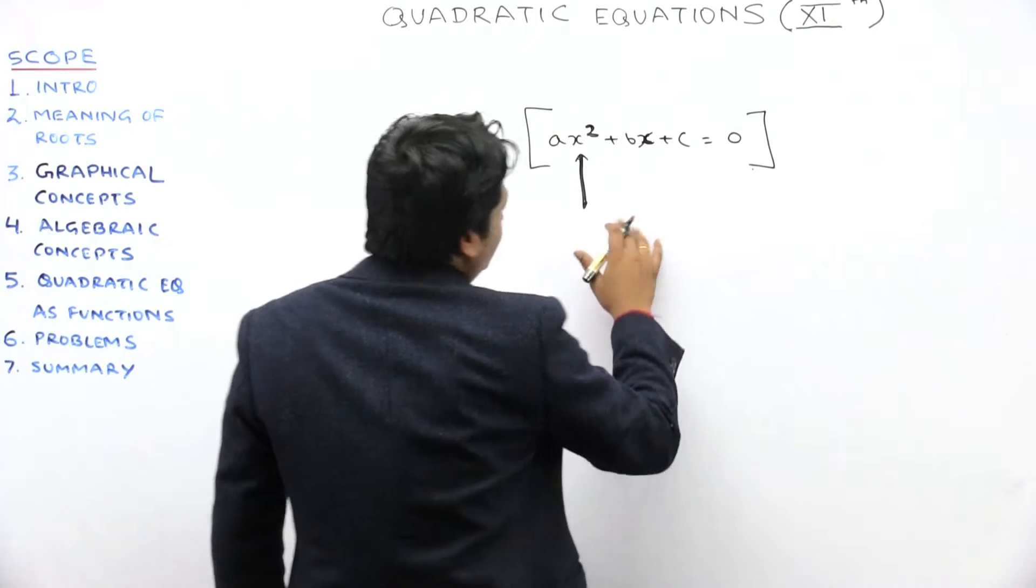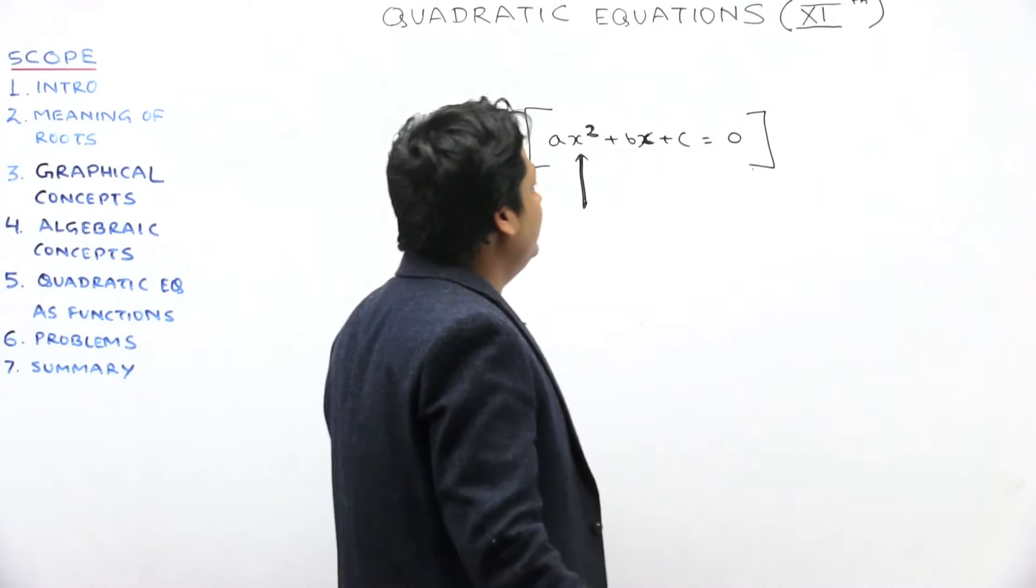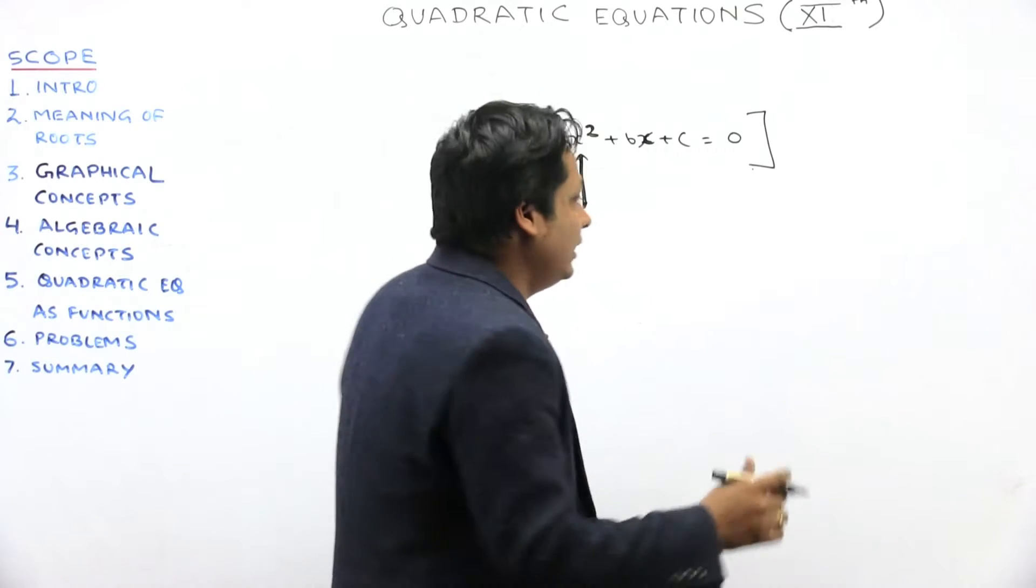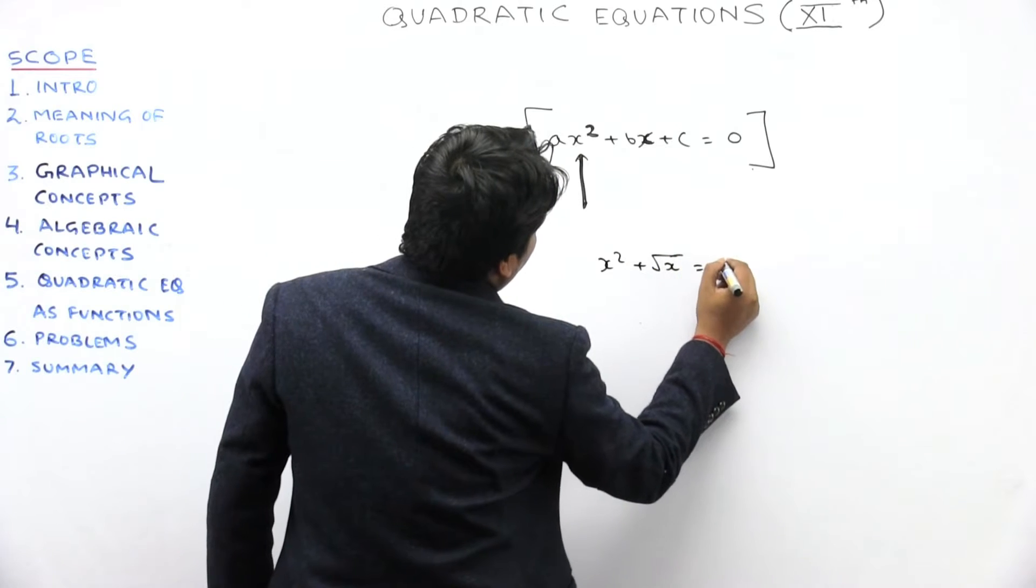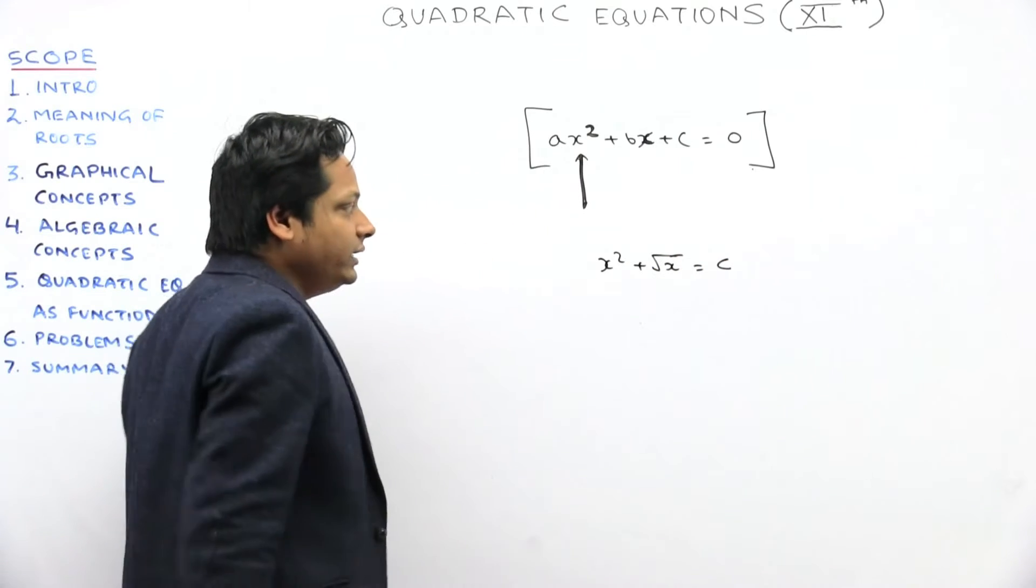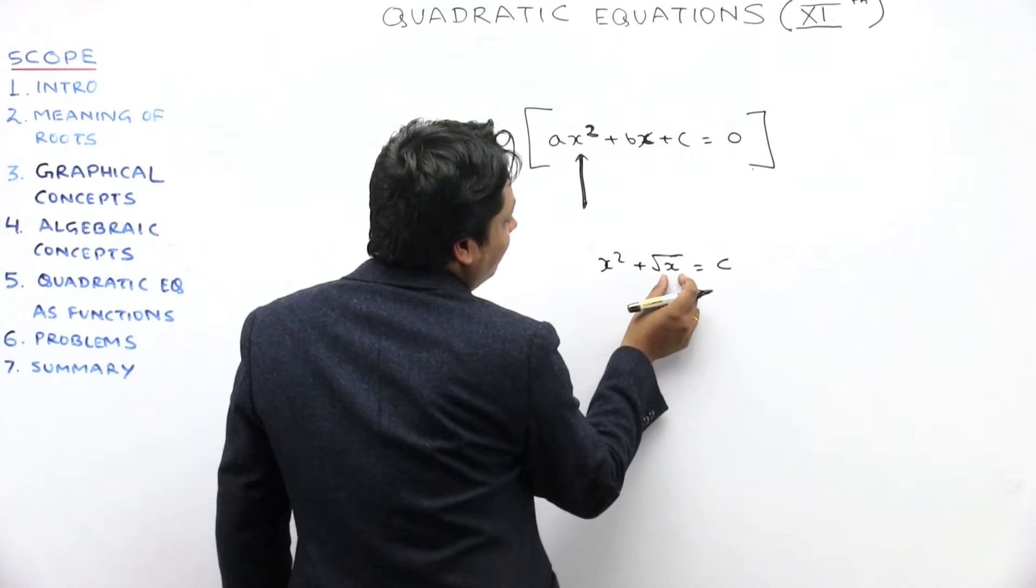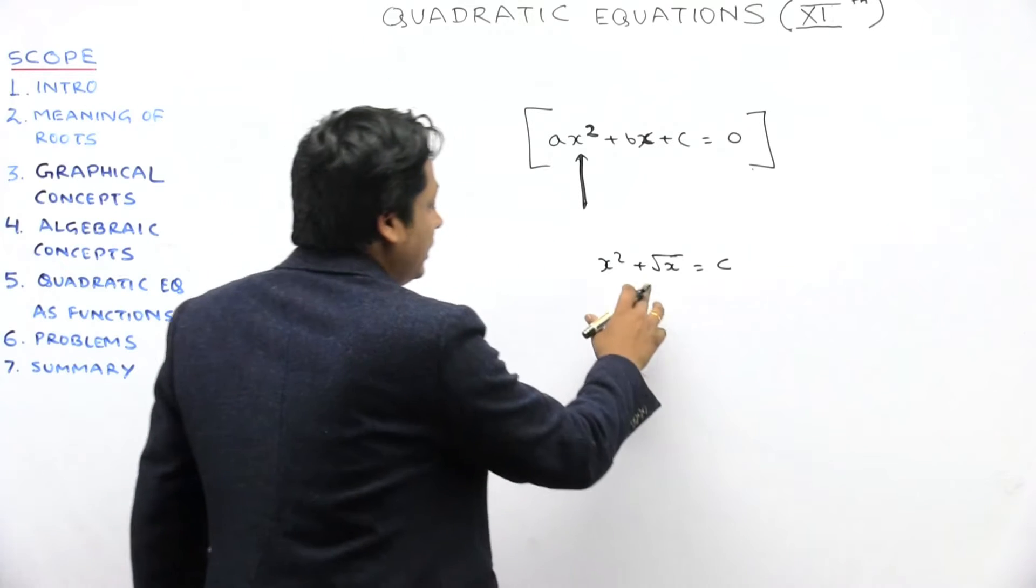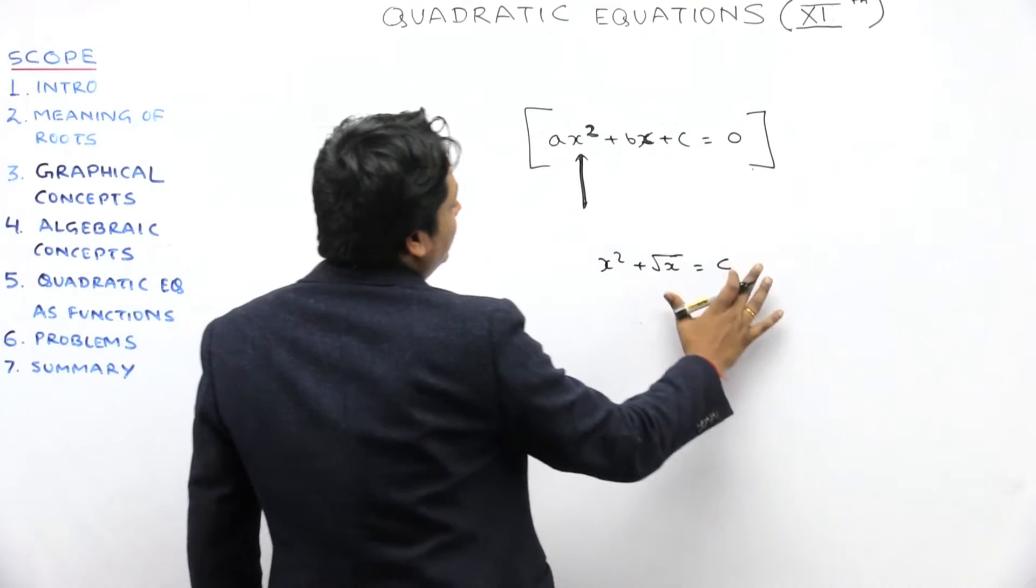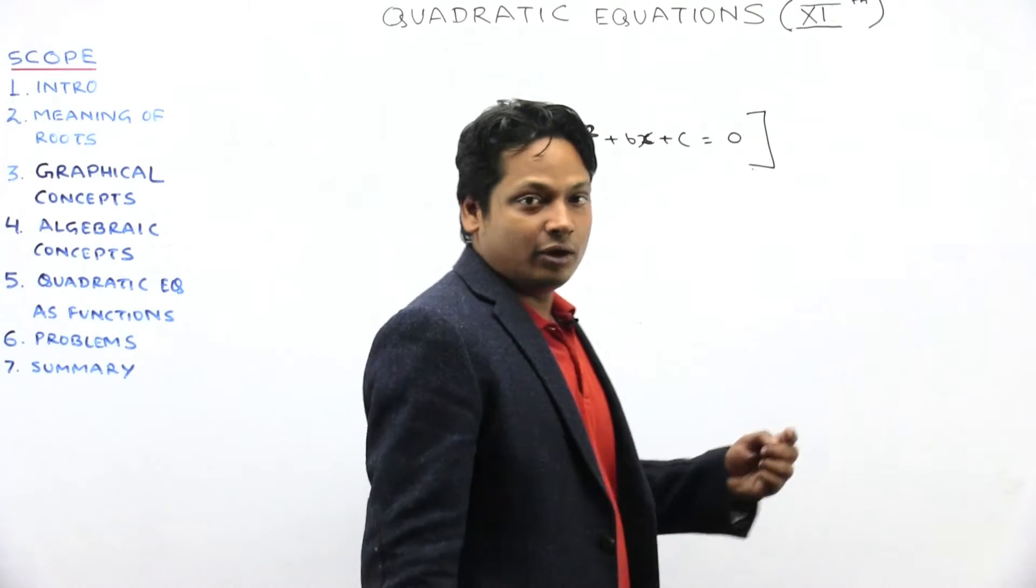The powers of x should all be positive integers and the maximum is 2. For example, x² + √x + c = 0 is not a quadratic equation because here the power of x is not a positive integer. So if you have a quadratic equation, it means that when you arrange the polynomial in descending order, the highest power of x should be 2.